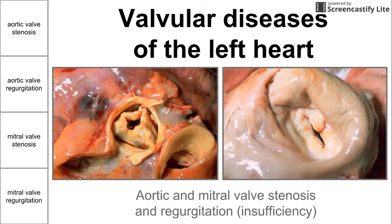This is a brief video on valvular diseases of the left heart. We're going to be going through aortic valve stenosis, aortic valve regurgitation, mitral valve stenosis, and mitral valve regurgitation. It's worth noting that sometimes the regurgitation diseases are also called insufficiency, so we will be talking about aortic valve insufficiency, which is the same as aortic regurgitation.